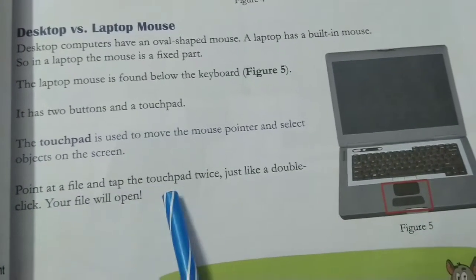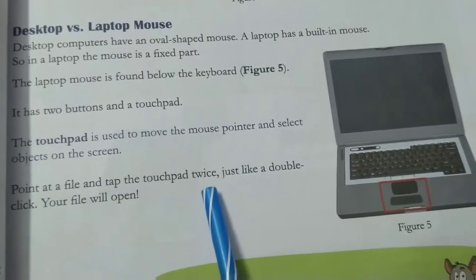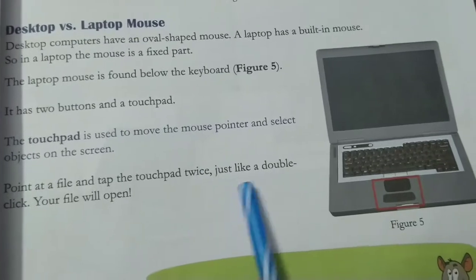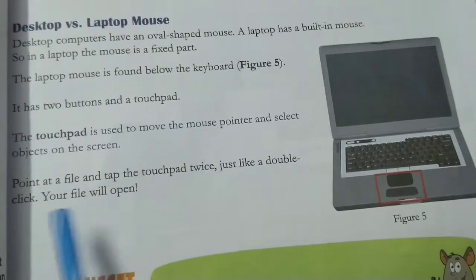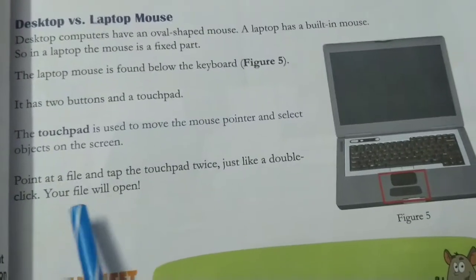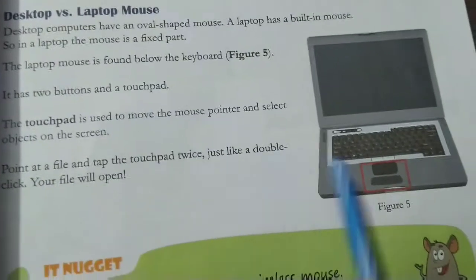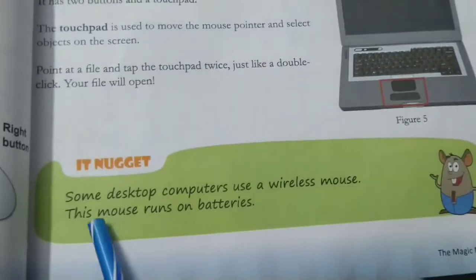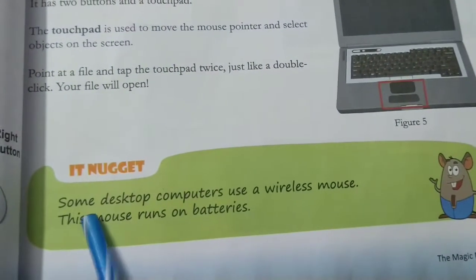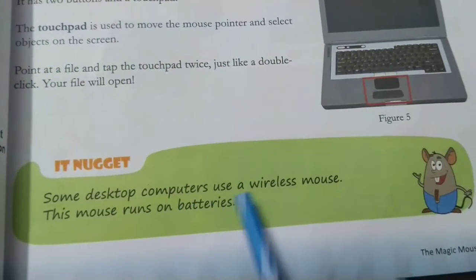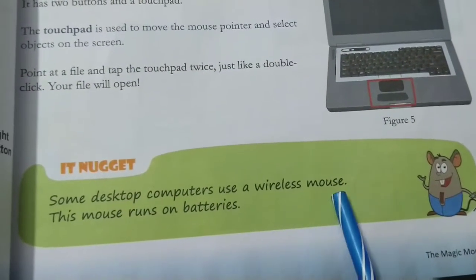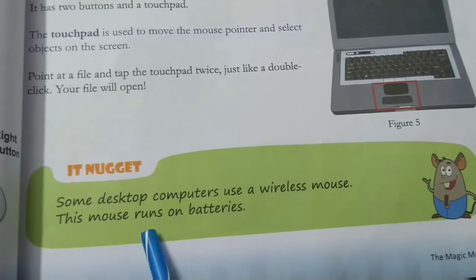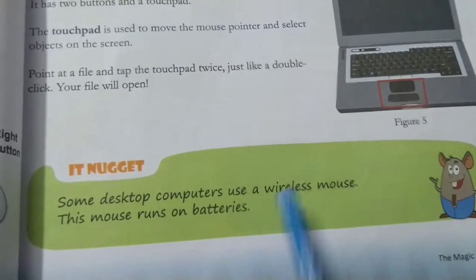Point at a file and tap the touch pad twice, just like a double click, and your file will open. Some desktop computers use a wireless mouse. This mouse runs on battery.